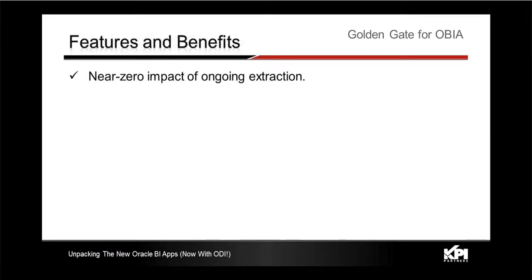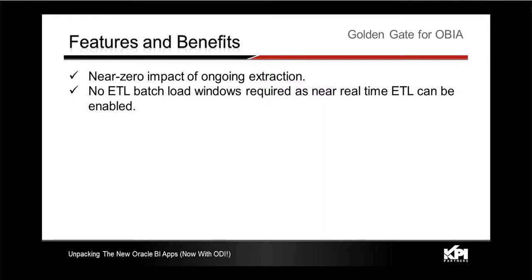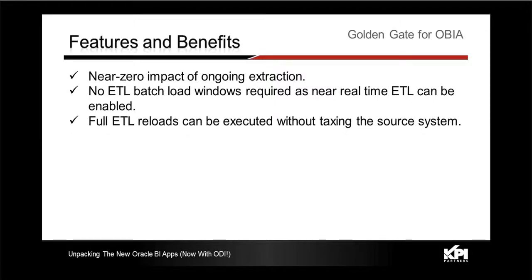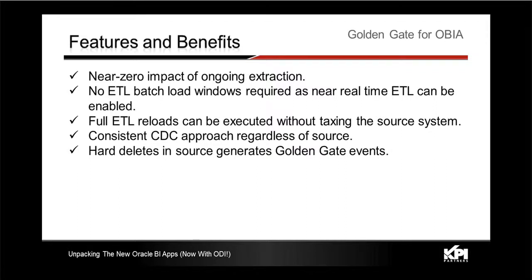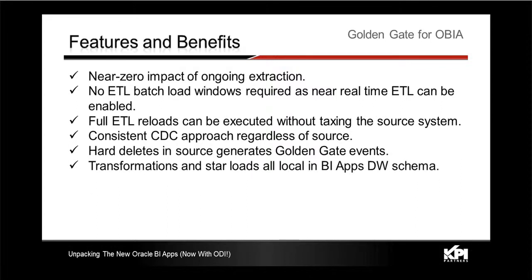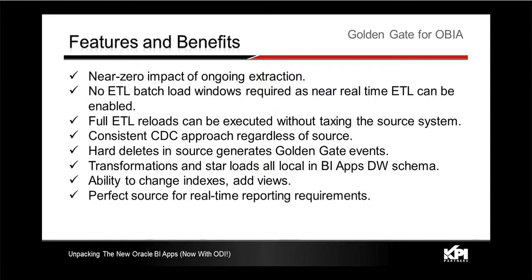The features and benefits of using Golden Gate include zero impact on ongoing extraction — you can have as many ETL loads during the day as needed because you are not hitting your production OLTP systems. Full ETL loads can be executed without taxing the source system. It provides a consistent change data capture mechanism regardless of the source. It also helps identify deletes without creating any database triggers, and incremental ETL loads can be tuned by adding additional indexes on top of the Source-Dependent Data Store.